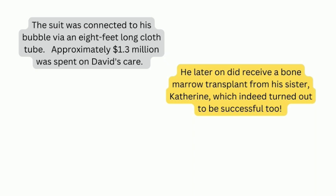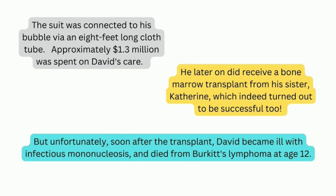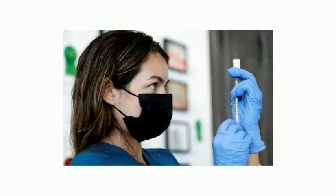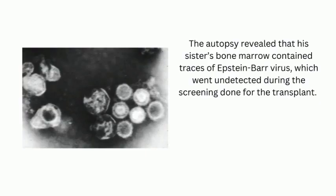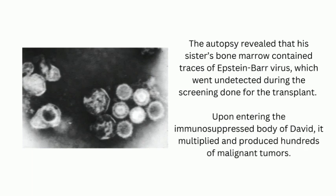He later received a bone marrow transplant from his sister Katherine, which turned out to be successful. But unfortunately, soon after the transplant, David became ill with infectious mononucleosis and died from Burkitt's lymphoma at the tender age of 12. This could be attributed to the fact that patients must be kept immunosuppressed during transplants to prevent graft rejection. The autopsy revealed that his sister's bone marrow contained traces of Epstein-Barr virus, which went undetected during screening. Upon entering David's immunosuppressed body, it multiplied and produced hundreds of malignant tumors.